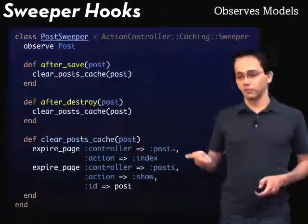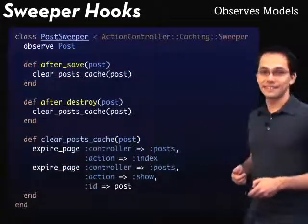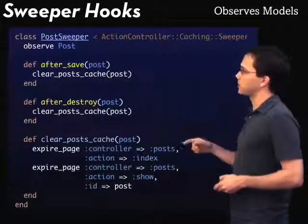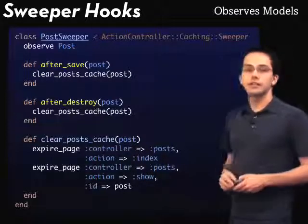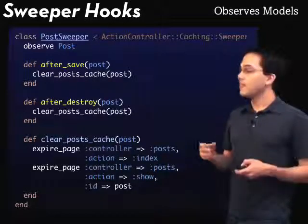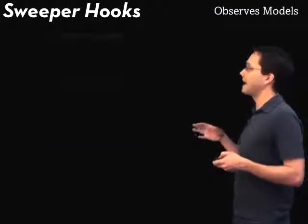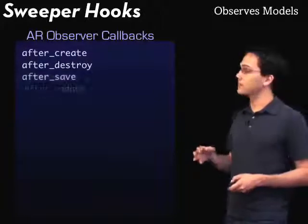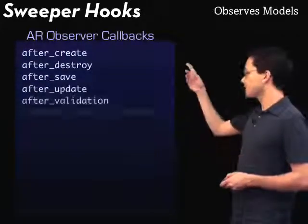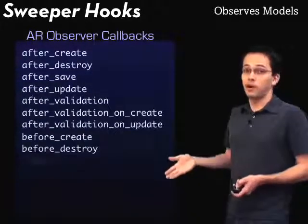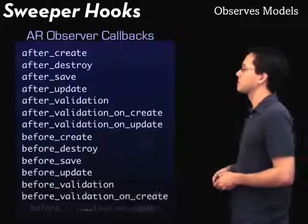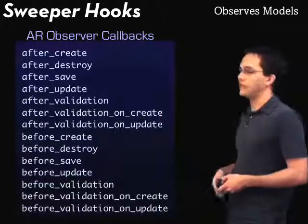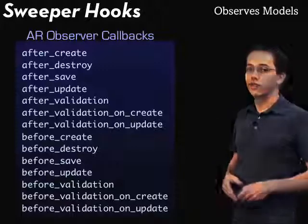Here's our sweeper code again if you want a second glance at it. As you can see, we've got our after_save and after_destroy — we call these sweeper hooks. Basically, we can use any ActiveRecord observer callbacks as our hooks. Here's an example of any of them we could possibly use in our sweepers. We would just define a function called one of these names, and it would properly hook into ActiveRecord.